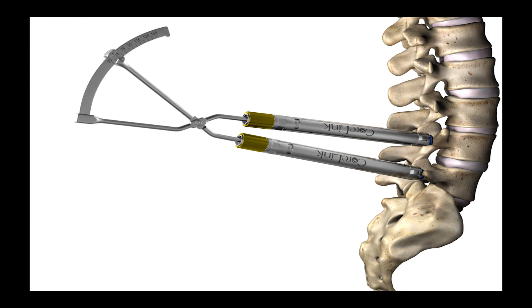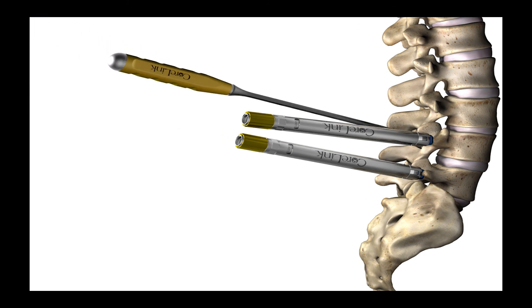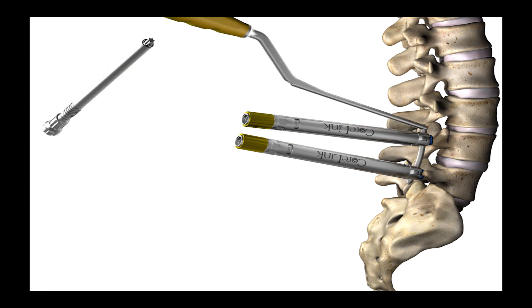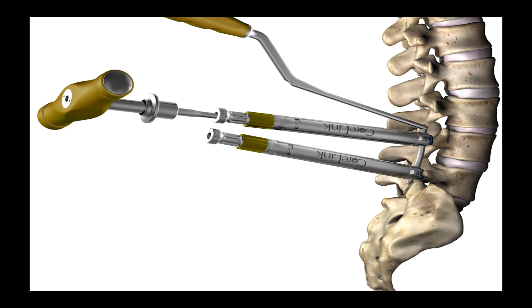The rod measuring caliper is used to determine the necessary rod length, the rods are then placed in position. Set screws are inserted and finally tightened and the screw extensions are removed.